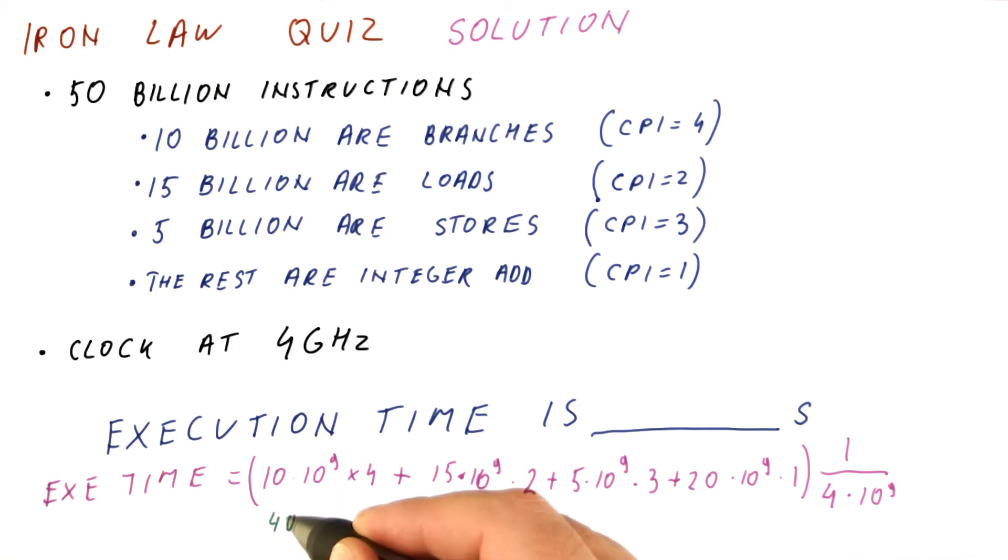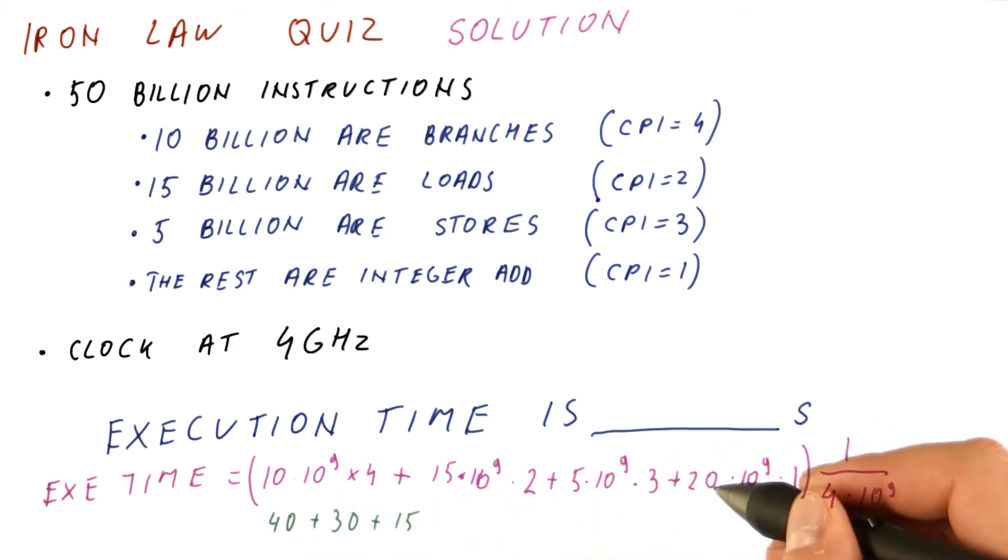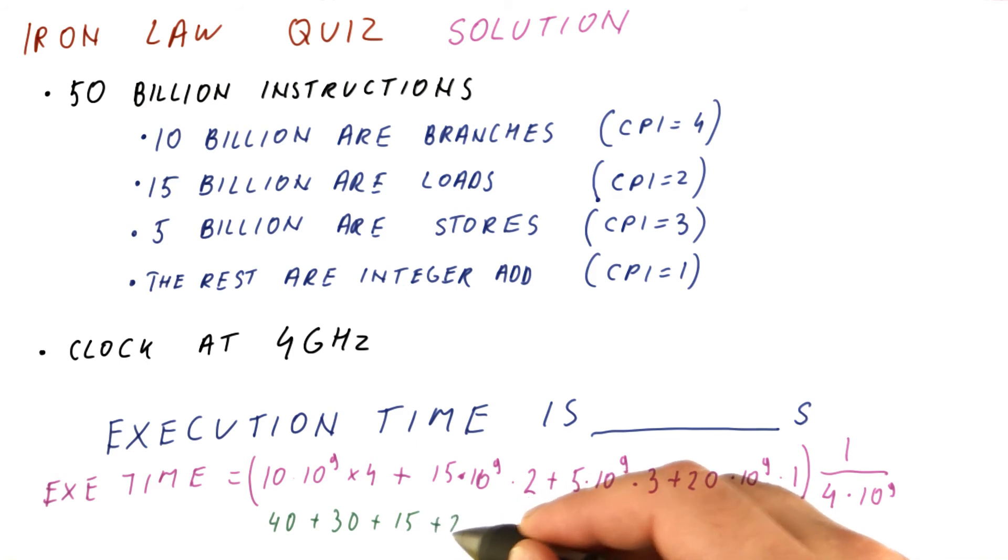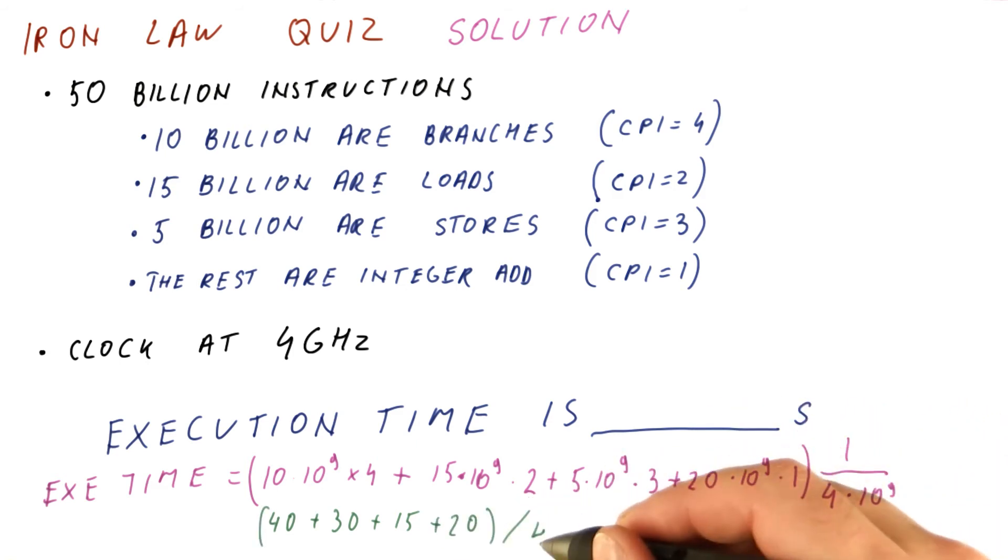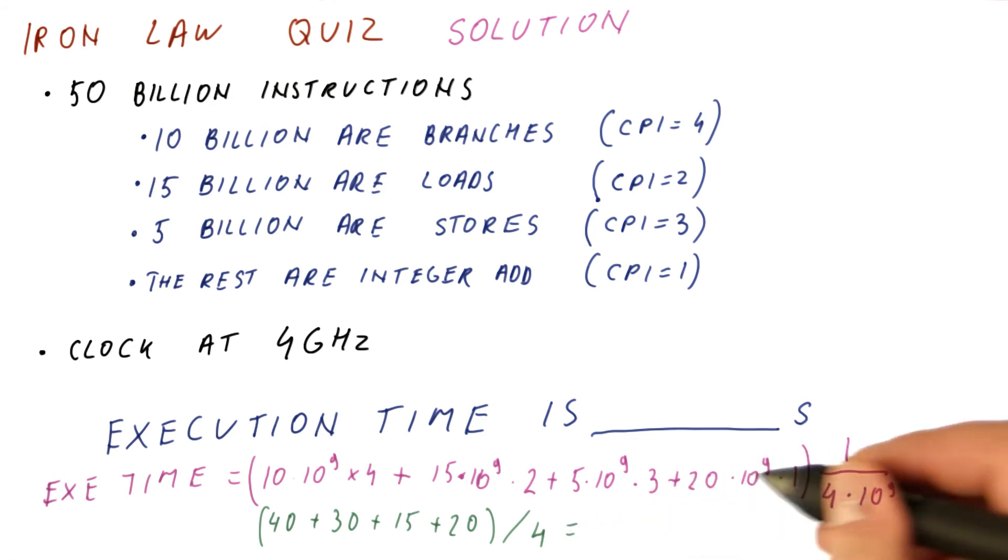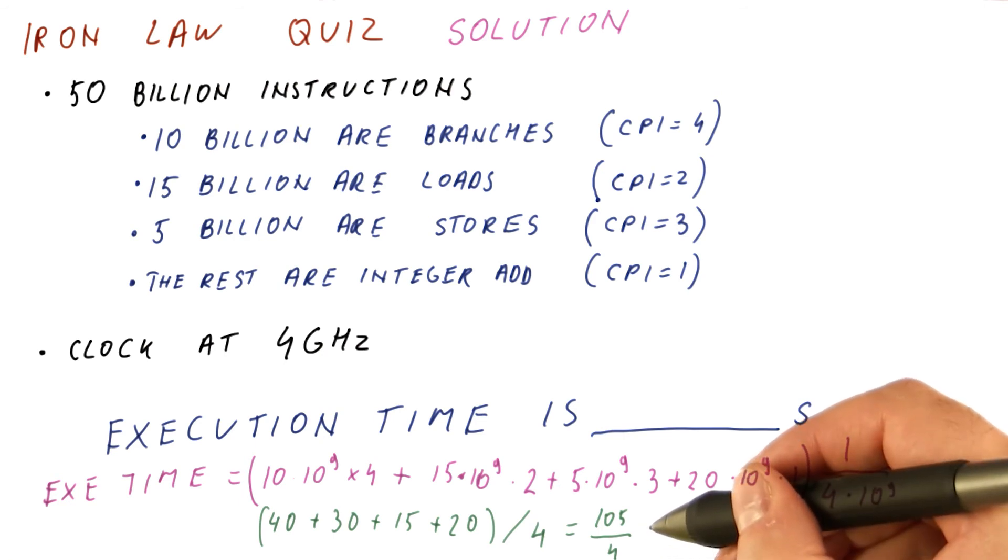This is 40 plus 30 plus 15 plus 20 times 10 to the ninth, divided by 4 times 10 to the ninth, so 10 to the ninth can be crossed out. And we get 105 over 4,